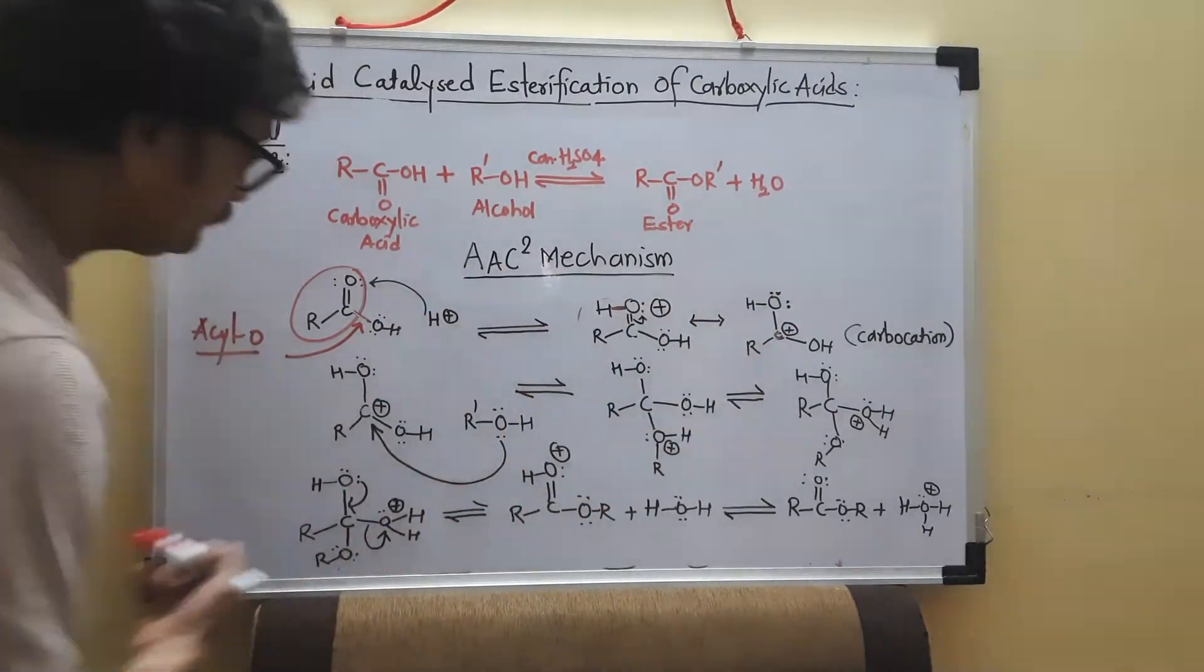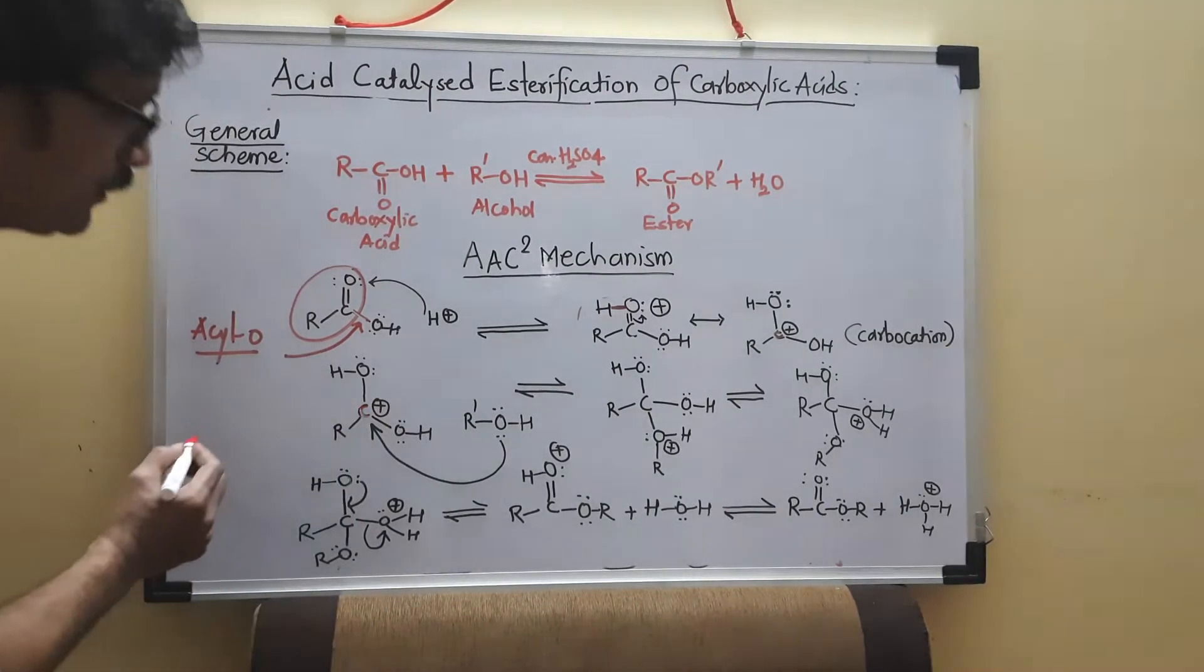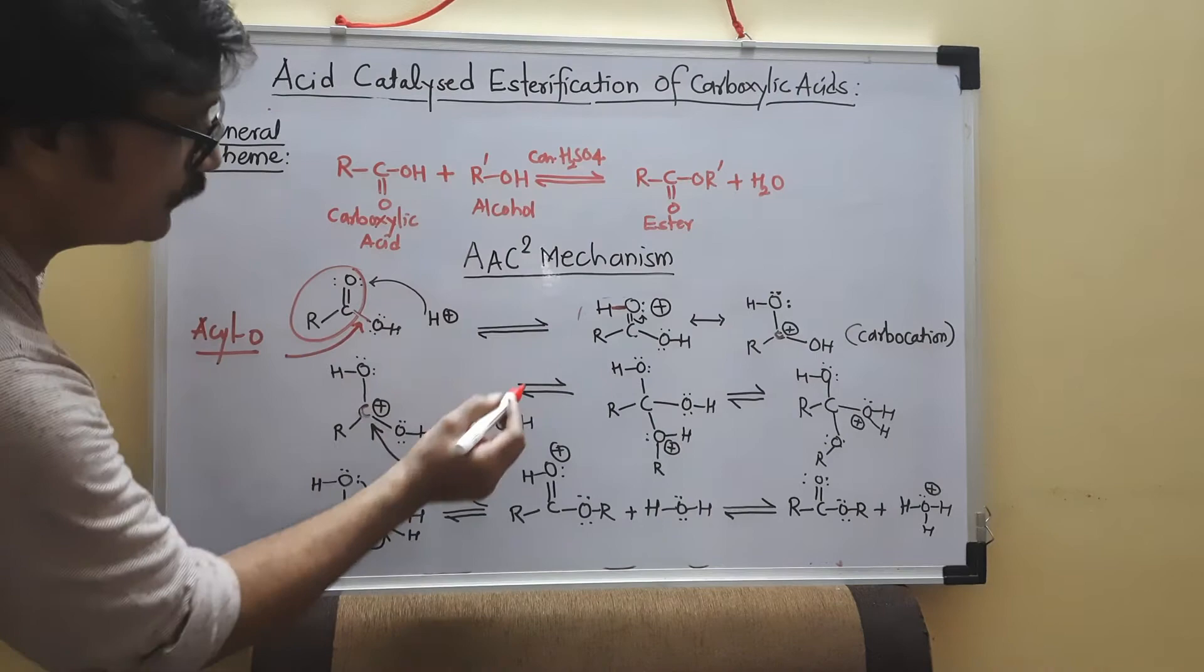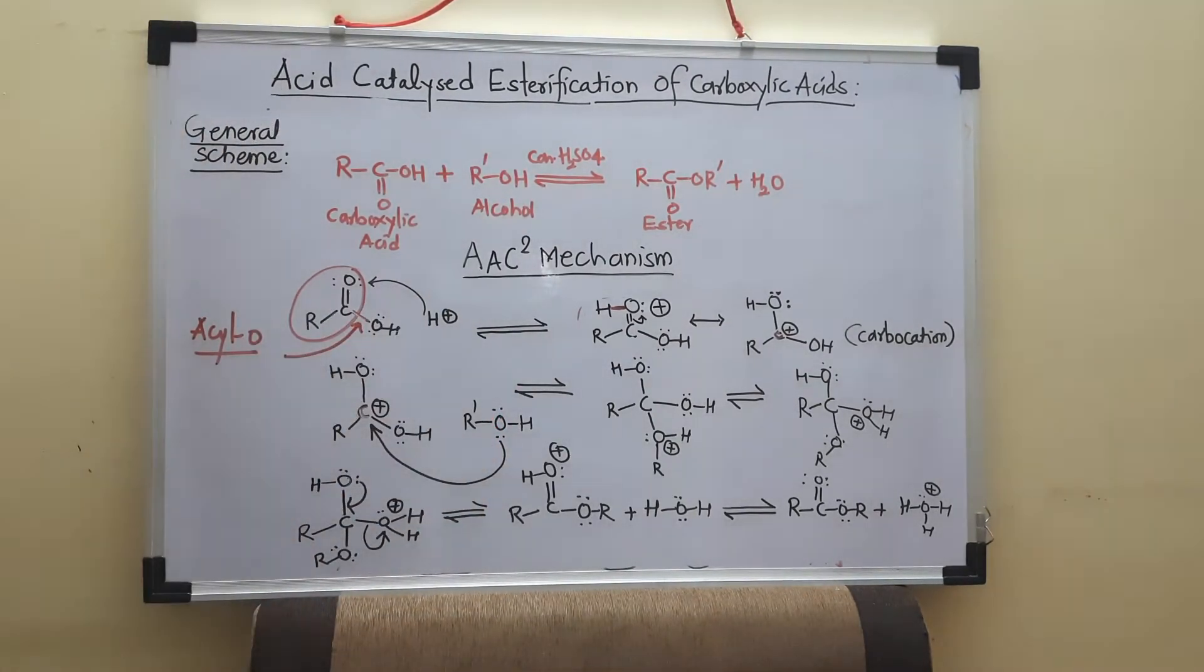Now, second step is what? So this carbocation, now complete positive charge is there over carbon. And our nucleophile, this alcohol is a nucleophile because oxygen bearing two lone pairs.